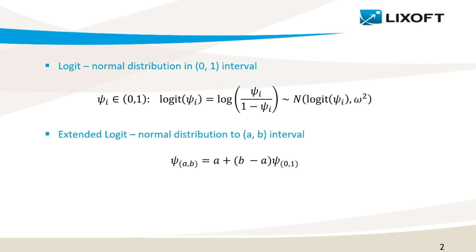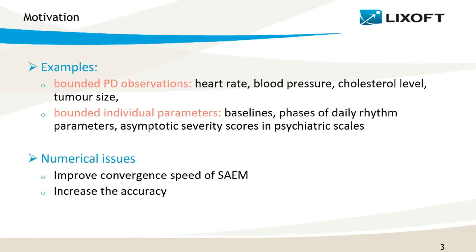In older versions of Monolix, this procedure requires two steps: one within the interface and one within a structural model. But starting from version 2019, you only need two clicks in the interface to modify the values of A and B. Before I show you how to do it, let me explain why it is important.